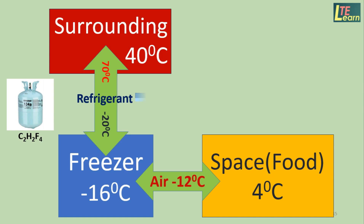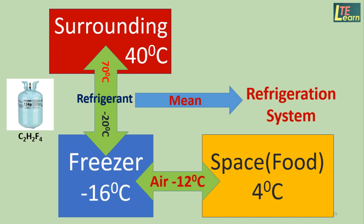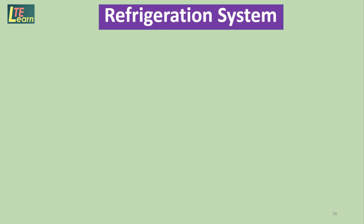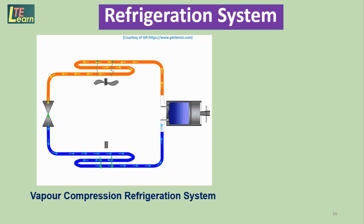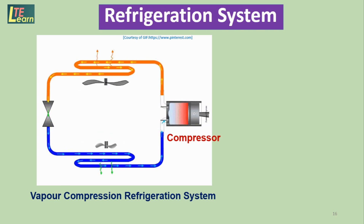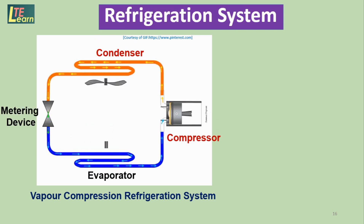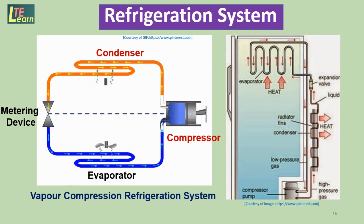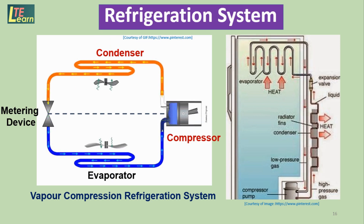So we now understand that the heat from the food to be cooled is taken by the evaporator and transferred using the refrigerant to the surrounding. This is done by the system in the refrigerator called the refrigeration system — specifically the vapor compression refrigeration system. It has four components: first, the compressor; second, the condenser; third, the metering device (expansion device); and fourth, the evaporator. Above the dotted line is the high-pressure and high-temperature region, and below the dotted line is the low-pressure and low-temperature region — heat is absorbed at the evaporator and rejected at the condenser.